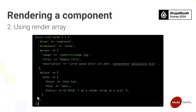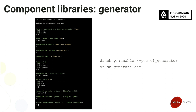Let's look at the component libraries generator module. This is an extension module available on Drupal.org called 'component libraries generator.' It generates a component for you on the fly by asking multiple questions. You can download this module and use the command 'drush generate sdc' and it will ask you multiple questions regarding what kind of component you are trying to build.